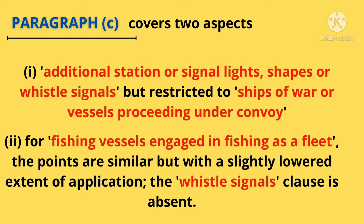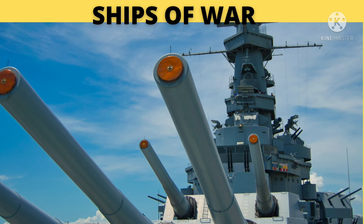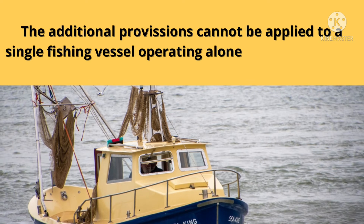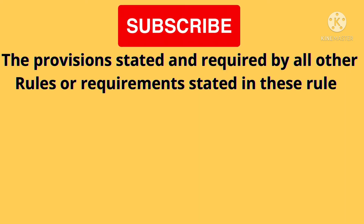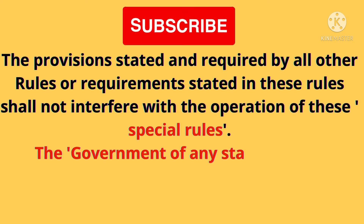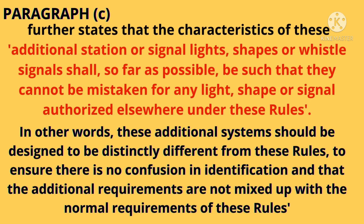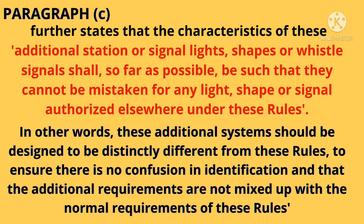Second, for fishing vessels engaged in fishing as a fleet, the points are similar but with a slightly lowered extent of application — the whistle signals clause is absent. The additional provisions cannot be applied to a single fishing vessel operating alone or independently and not forming part of a fleet. The government of any state has the authority of making any such special rules. Paragraph C further states that the characteristics of these additional station or signal lights, shapes, or whistle signals shall, so far as possible, be such that they cannot be mistaken for any light, shape, or signal authorized elsewhere under these rules. In other words, these additional systems should be designed to be distinctly different, to ensure there is no confusion in identification.